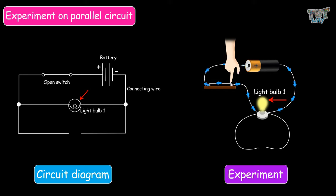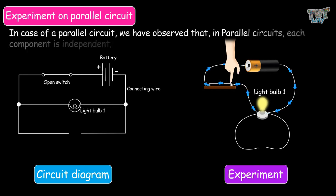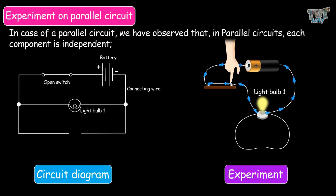Therefore, in the case of a parallel circuit, we have observed that each component is independent. If one of the bulbs is not working, the other bulbs will continue to glow.